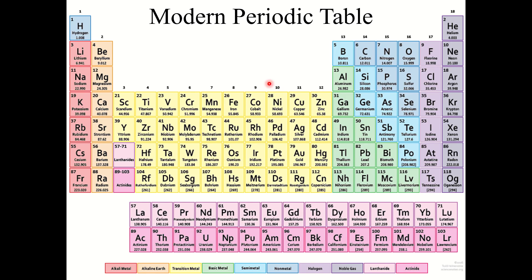Here is the modern periodic table. We're all the way up to 118 elements now. These elements at the bottom have all essentially been created by humans and they are all very unstable — they decay radioactively very quickly. In fact, everything past element 92 is technically man-made.